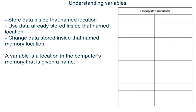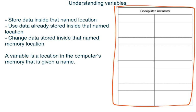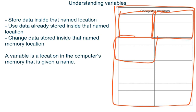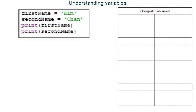In this video I am using this table to represent the computer's memory. Here is one memory location, here is another memory location, here is another memory location, etc. Let's look at some examples of variables in Python programs.